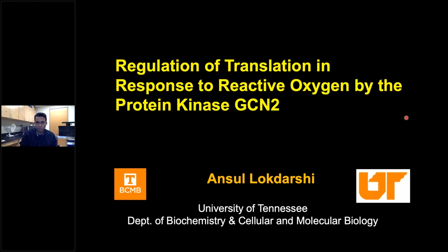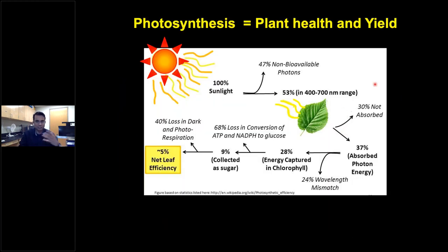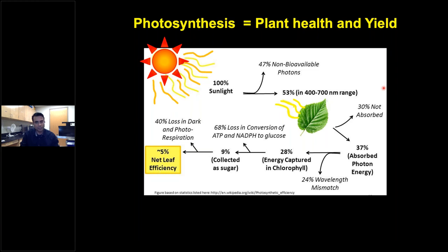GCN2 works under the command of chloroplastic reactive oxygen species. Alice already provided a nice background on photosynthesis, so I'll just briefly note that photosynthesis is one of the most important biochemical processes on earth, and increasing photosynthetic efficiency means better plant health and better yield — greater good for humankind. Sadly, photosynthesis is not as efficient as we think, limited by physical and biochemical factors, giving a net photosynthetic output of around five percent in a typical leaf.